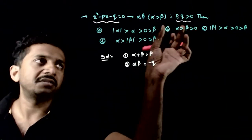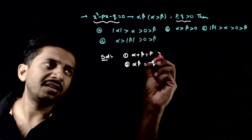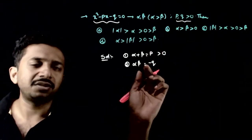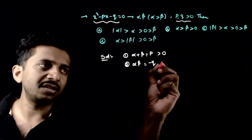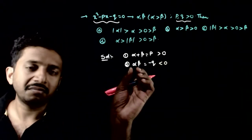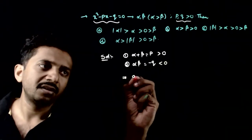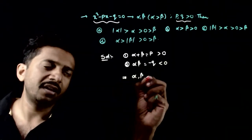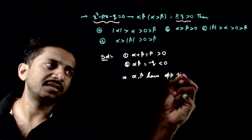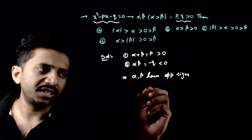According to the given question, p and q are positive. So alpha plus beta is greater than 0, and alpha times beta equals minus q — since q is positive, minus q is less than 0. This means alpha and beta have opposite signs.